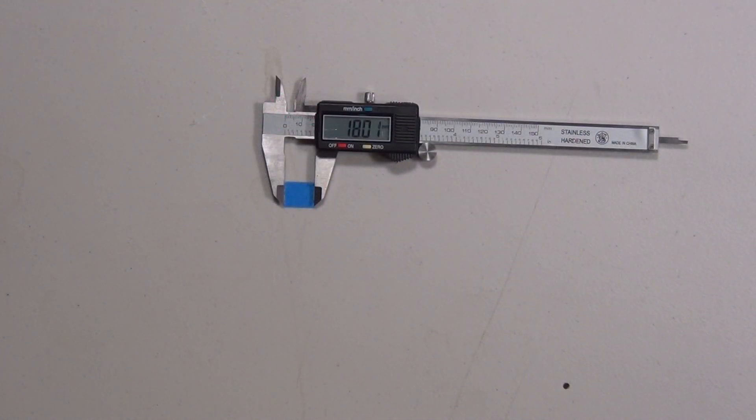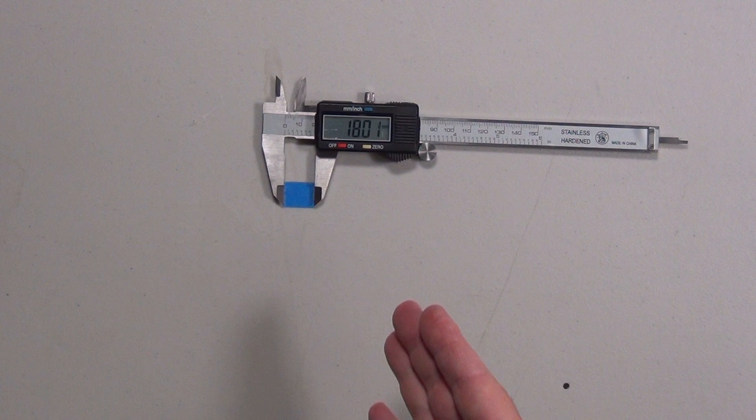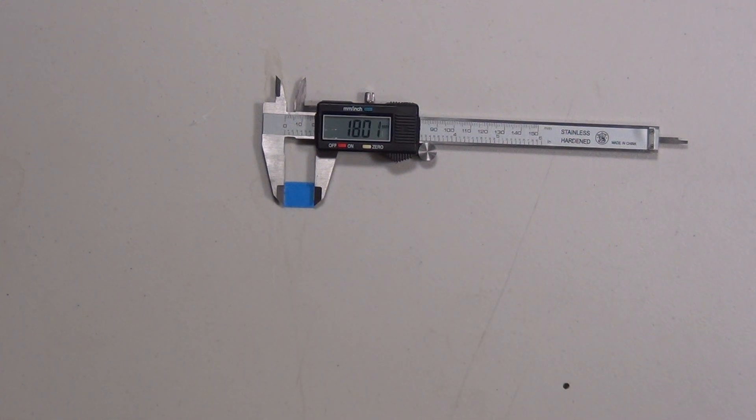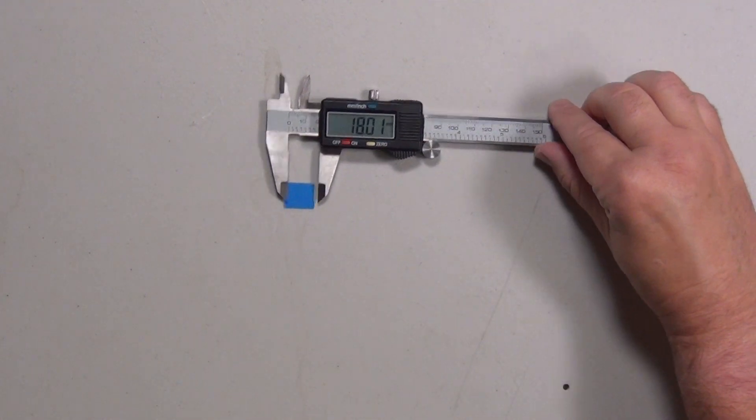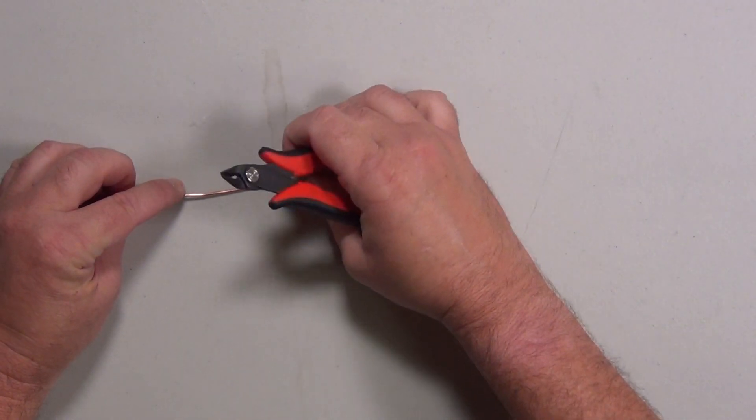One of the first things we're going to do is prepare the Anderson power poles. And it says to cut 14 pieces between five eighths to three quarter inches or 16 to 19 millimeters. As you can see, I'm going to be cutting them into 18 millimeter pieces. What I've done is I've made a little piece of tape that's 18 millimeters wide. I think that'll speed up the process.